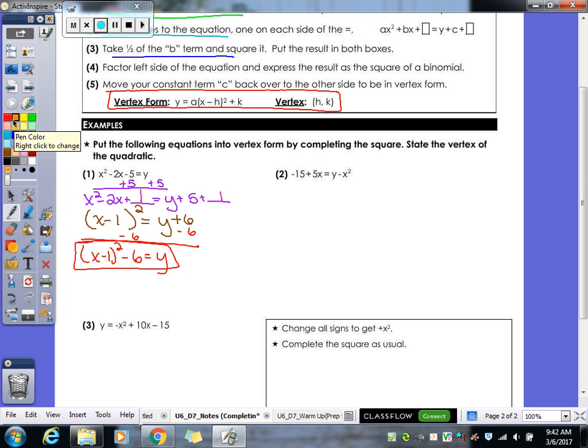So now, because we're just putting in vertex form, we're not solving, all we do is we subtract the 6 back over. I have (x - 1)² - 6 = y. That is our vertex form. So there's fewer steps when we're doing vertex form. So now what we also have to do is state what is our vertex. So remember, the x value from your vertex is inside the parentheses but you got to change the sign when you pull it out, so it becomes a positive 1, and then the -6 stays as -6. So that would be our vertex. 1, -6.